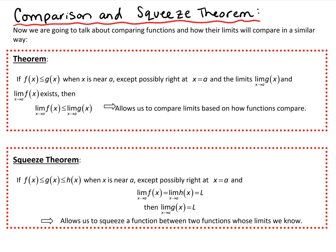The first theorem says: if f(x) is less than or equal to g(x) when x is near a — and when we're looking at limits, we're concerned about when x is close to a value a, not necessarily right at a — so the functions don't have to have the same property right at x equals a, just near a. If both limits exist, then the limits will also have the same relationship: the limit of f(x) as x approaches a will be less than or equal to the limit of g(x) as x approaches a.